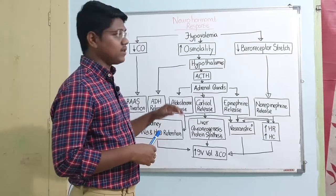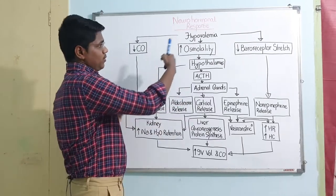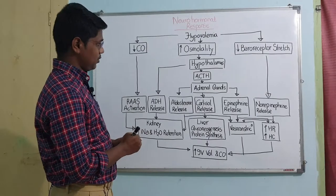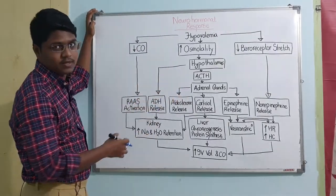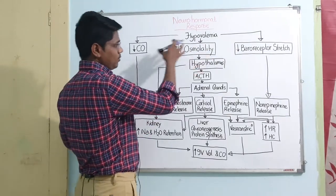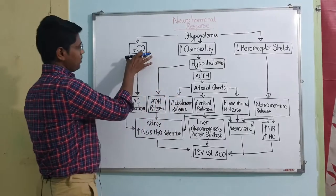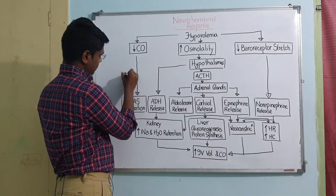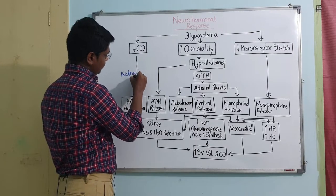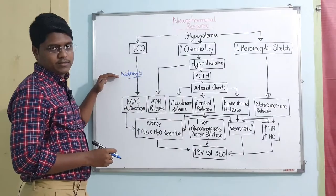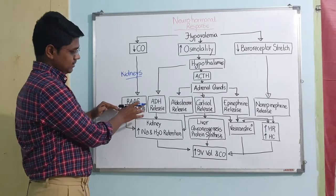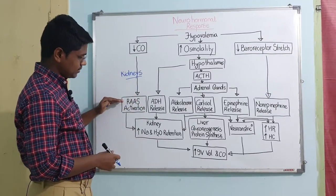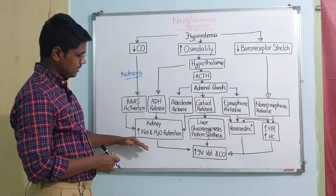Now we will understand the neuro-hormonal response — that is, when there is hypovolemia, what the body does to restore its volume. When there is hypovolemia there will be a decrease in cardiac output. When there is decreased cardiac output, there will be less perfusion to the kidneys, which will activate the RAAS — renin-angiotensin-aldosterone system. RAAS activation results in increased sodium and water retention, which increases intravascular volume and cardiac output.